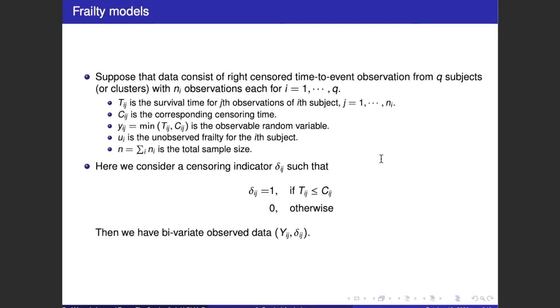Suppose the data consists of right-censoring time-to-event observations from key subjects or clusters. And we have variables T_ig, C_ig, Y_ig, and u_i.